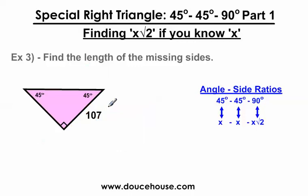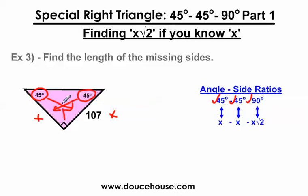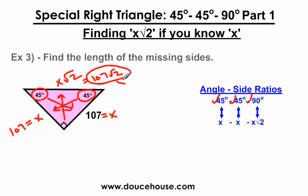The last problem — I'm giving you one of the sides again. I'm a big fan of labeling the sides opposite these angles x, x, and x square root 2. Opposite the 45, I'm going to label this x. Opposite this other 45, I'm going to label this x as well. Opposite this 90-degree angle, I'm going to label x square root 2. I highly recommend doing this every time because it simplifies things and makes the problem a lot easier. Right now I know x is 107, so this side is also 107, and this side becomes 107 square root 2. Plugging into my calculator, 107 times the square root of 2, I get 151.3.